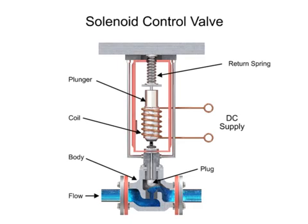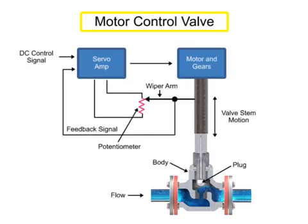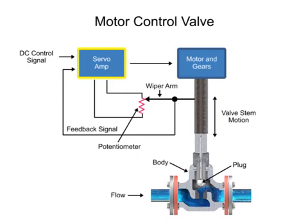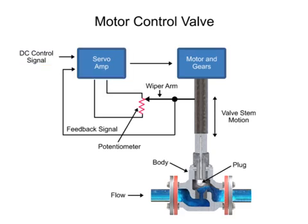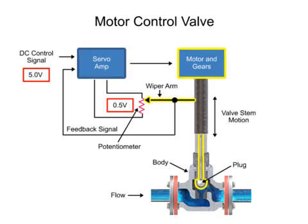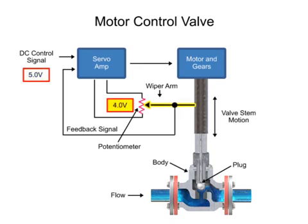Another method for variable valve positioning uses a motor and is referred to as proportional control mode. Using a gear motor attached to the valve stem, a servo amplifier provides a DC control signal that moves the valve to the desired position. Feedback is achieved with a wiper arm attached to the valve stem that sends a signal back to the servo amplifier where the position is monitored. The servo amplifier drives the motor until the control signal is equal to the feedback signal.